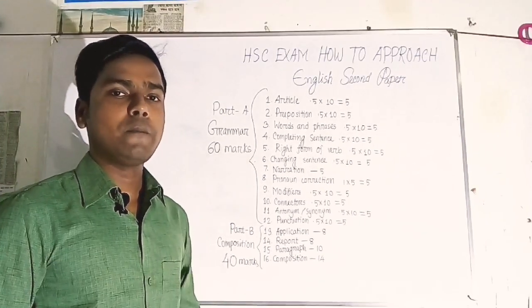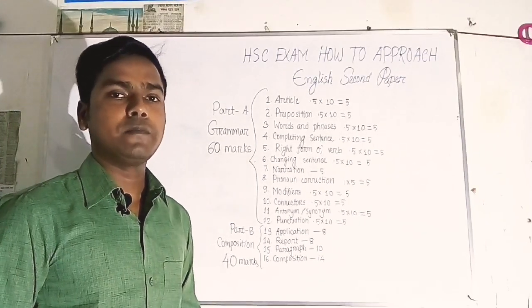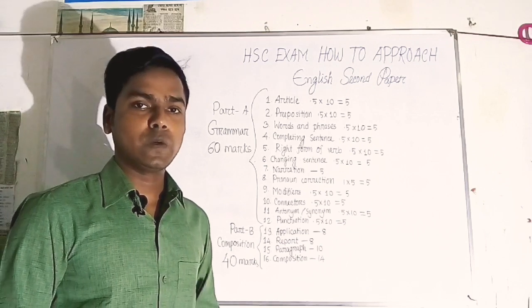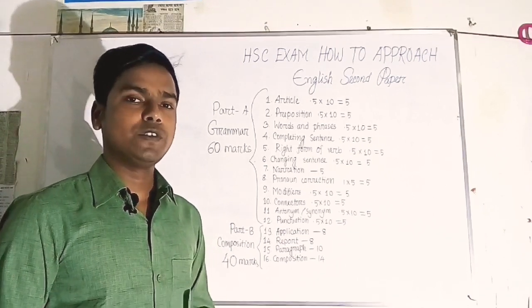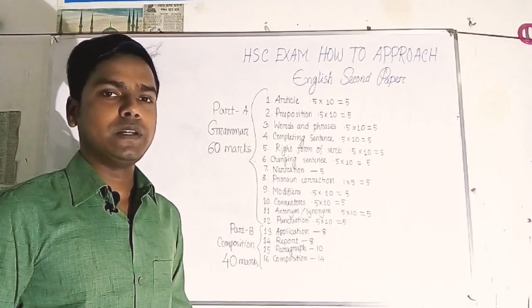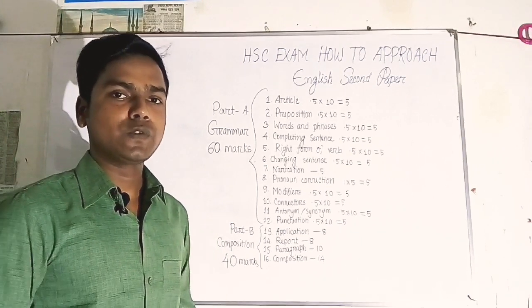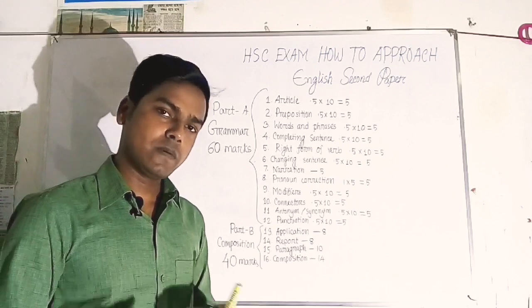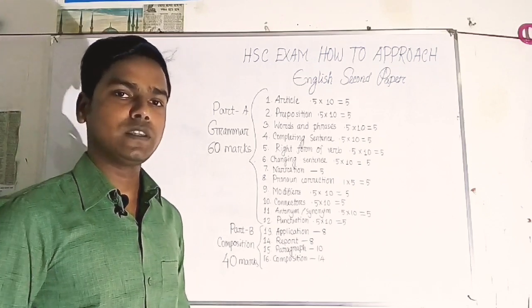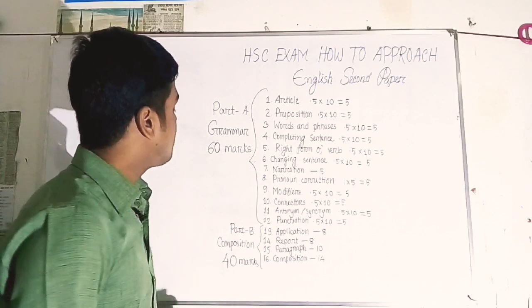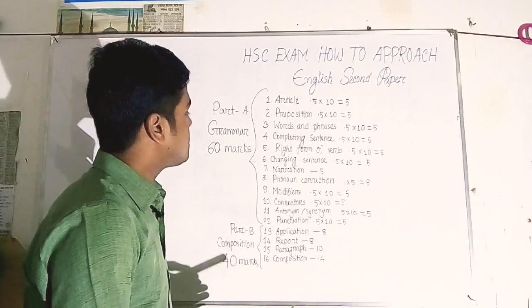Number 6 is Changing Sentences. You need to change sentences through simple, complex, compound, affirmative, negative, interrogative, exclamatory, positive, comparative, and superlative sentence types. You can change the word and turn the sentence accordingly. Total mark is 5.